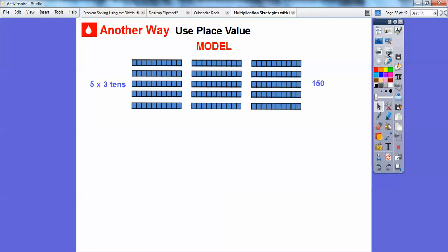So we just add another 30 over here is 120. And then finally, 5 times 3 tens gets us 150 right there. So we can use place value right there. So 5 times 30 is still 150.